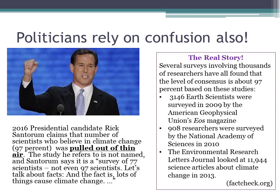On the right-hand side, we have the real story: several surveys involving thousands of researchers have found that the level of consensus is about 97%. The first bullet: 3,146 Earth scientists were surveyed in 2009 by the American Geophysical Union's EOS magazine. Then 908 researchers were surveyed by the National Academy of Sciences in 2010. And in 2013, the Environmental Research Letters Journal looked at 11,944 science articles about climate change. By looking at just these numbers from factcheck.org, we are already seeing almost 15,000 scientists — not 77 or even 97.